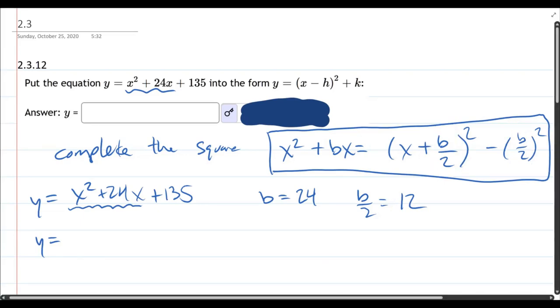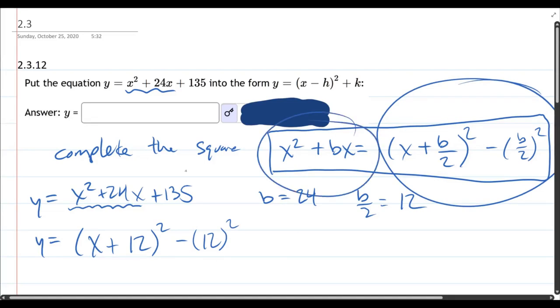Okay, what I have underlined here is going to turn into x plus b over two, which is 12 squared minus b over two, which again is 12, and that is also squared. Hopefully you expanded this and convinced yourself it's equal to the left side. That plus 135, I didn't do anything to that, so we just bring that down.